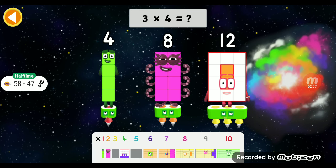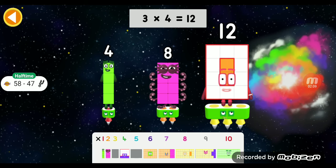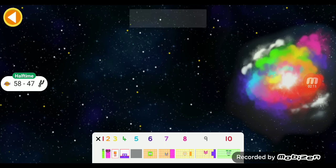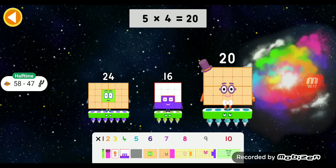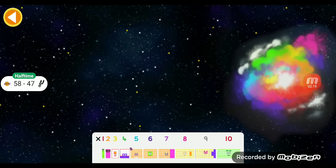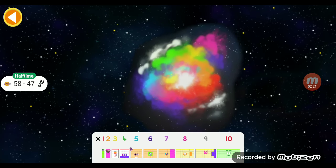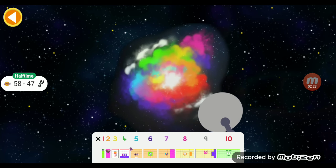3 times 4 equals 12. 5 times 4 equals 20. The hyperbooster is ready for use. 4 times 4 equals 16. 4 times 4 equals 4.